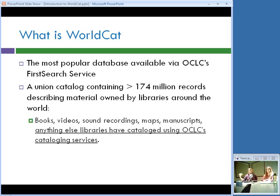I always talk about WorldCat as being the most popular database available via OCLC's FirstSearch service — popular may not be the best word, but it's certainly ubiquitous in the library community. WorldCat is a union catalog, which means it is a catalog containing holdings information contributed by many different libraries. It contains over 174 million records describing material owned by libraries around the world. Think about all the different types of items libraries own and catalog: books, videos, sound recordings, maps, manuscripts, musical scores, but also increasingly digital objects, online sound recordings, digital photographs. You can even find a catalog record describing a skeleton that one of the libraries owned — you never know what you'll find in WorldCat.